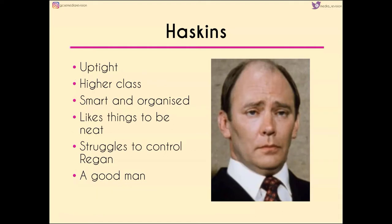Haskins is very uptight. We get the impression that he's a higher class than Regan and Carter because of the way that he's dressed. The way he's dressed also tells us that in terms of his personality, he's smart and organised, which is partly where the confrontation between him and Regan comes about — because he likes things to be neat and organised and likes to be in control. So because Regan is somebody who doesn't want to be controlled, we get this confrontation happening right away.